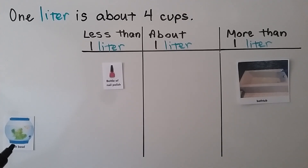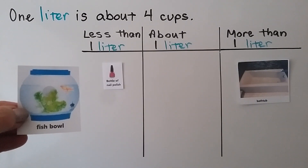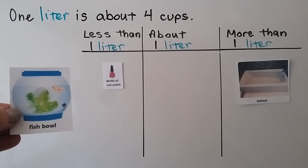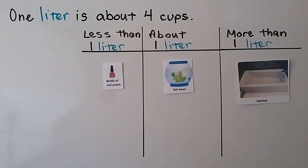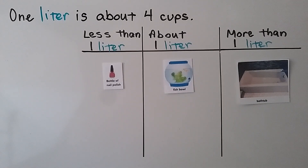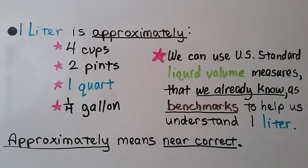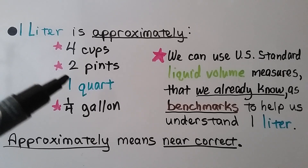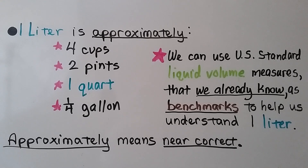What about this fish tank? If we take a look at the size of the little goldfish, I would think that there must be about a liter in this fish bowl. We can use what we know about the size of goldfish to help us compare it to the size of the bowl. One liter is approximately four cups, two pints, one quart, or one-fourth of a gallon. We can use US standard liquid volume measures as benchmarks to help us understand one liter.